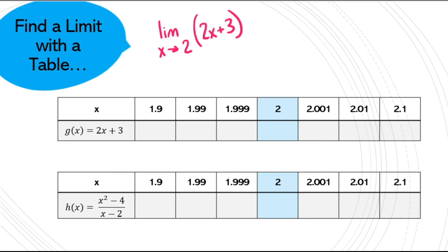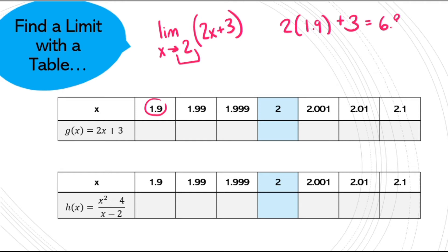I could have picked values like −2, −1, or 0, but you want to see values really close to what a will be. So what I'm doing here, I just have to do the math. For my first value, I do 2 times 1.9 plus 3, and that gives me about 6.8. So the value of this function when x is equal to 1.9 is 6.8. Let's get closer to a, let's get closer to 2.